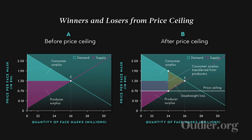Let's see if consumers won or lost as a result of the price ceiling — the answer is a mixture of both. Consumers who would have bought the good without a price ceiling, but now cannot because fewer units are being supplied, lost out. However, consumers who did get to buy face masks did so at a lower price than they would have otherwise. Instead of paying one ringgit 30 sen, they now pay 70 sen, so their consumer surplus increases.